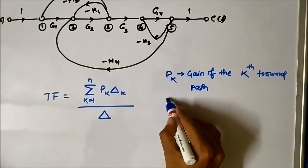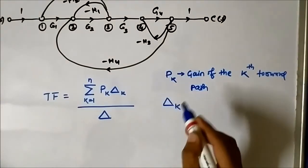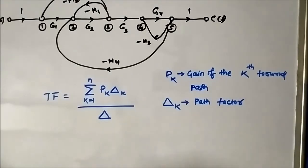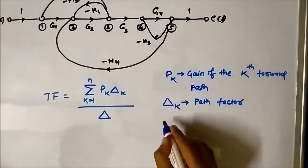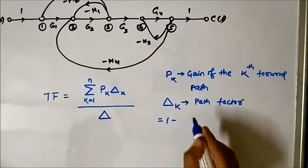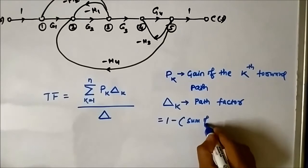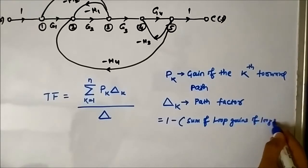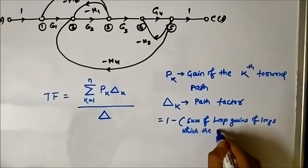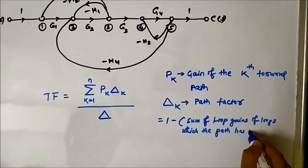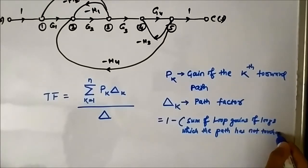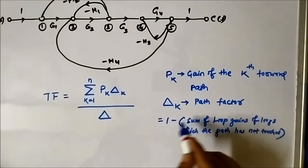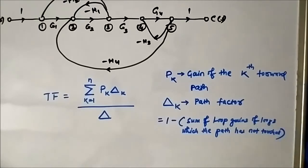The next component is delta_k, which is called the path factor. The path factor is given by 1 minus the sum of the loop gains of the loops which the path has not touched. The path factor for a particular path is represented as 1 minus the sum of the loop gains of the loops which the path has not touched.